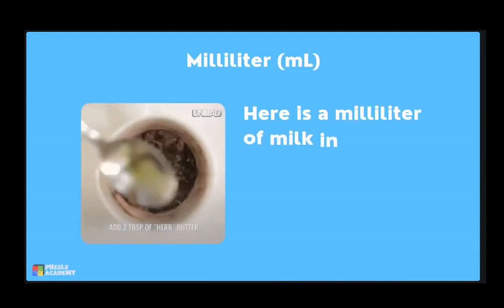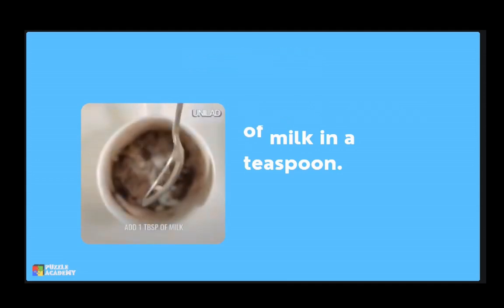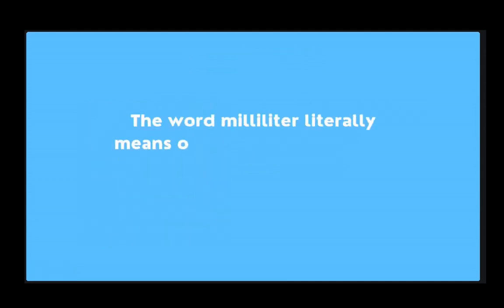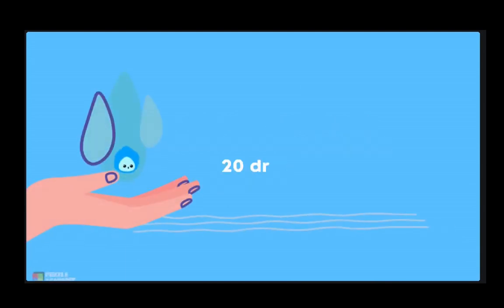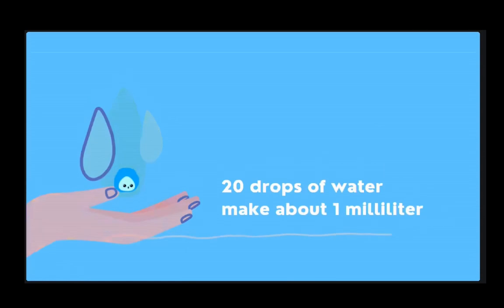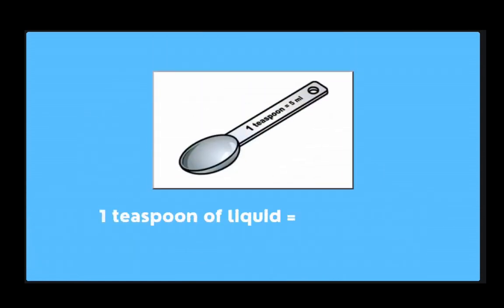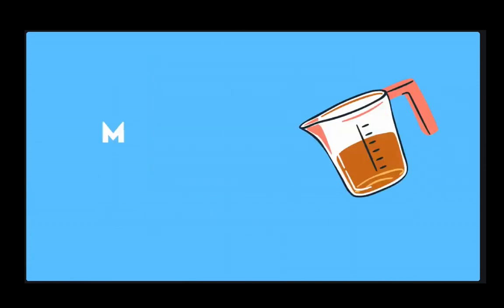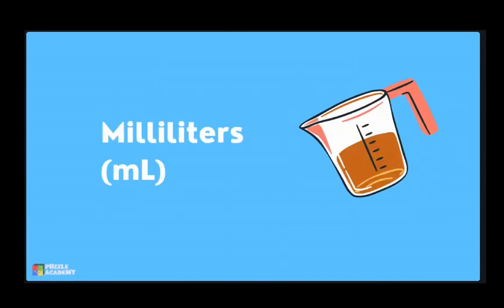A milliliter is a very small amount of liquid. Here is a milliliter of milk in a teaspoon — it only fills the bottom of the teaspoon. The word milliliter literally means one thousandth of a liter. When we collect 20 drops of water, we have about one milliliter, and a teaspoon can hold about five milliliters. Milliliters are often written as mL — so 100 mL means 100 milliliters. The capital L is used so it doesn't look like the number one.